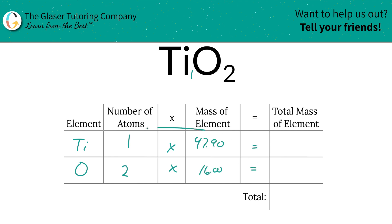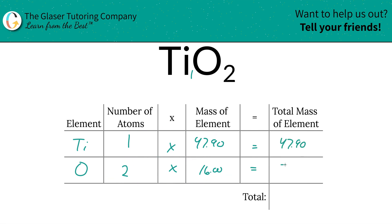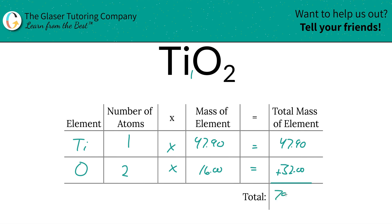Then we're going to find the total mass of the element in the compound by simply multiplying this row by column. So that's 47.90 for titanium. Oxygen then is going to be 32. And then to find the total mass of the entire compound, we're simply going to add up the total masses of each element — doesn't that kind of make sense? And it works out to be 79.90.